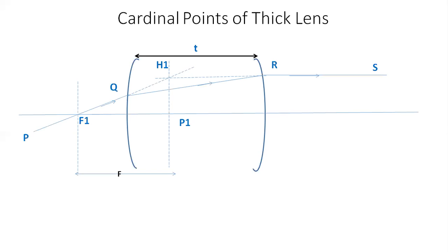The distance between the first focal point and the first principal point is the focal length of the thick lens. In this diagram we have now defined the first focal point F1, the first principal point P1, the first focal plane, and the first principal plane.